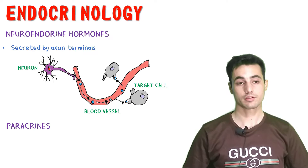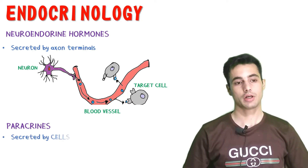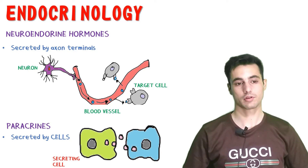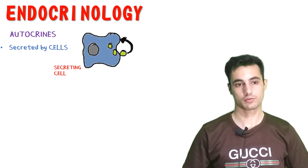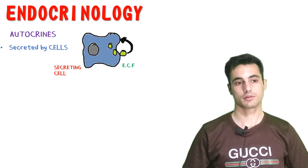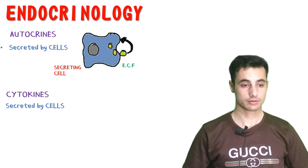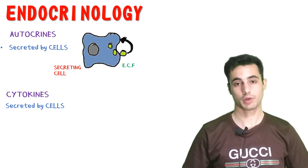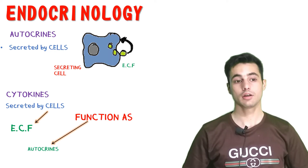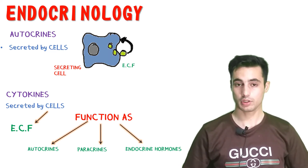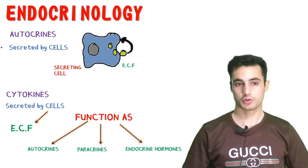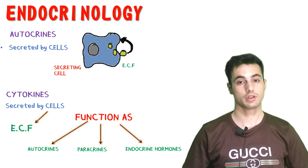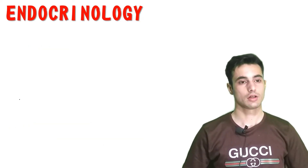Paracrines are secreted by cells into the extracellular fluid, and they influence the function of neighboring cells, which may be different or similar. Autocrines are secreted by cells into the extracellular fluid but influence the function of the cell itself. Cytokines are also secreted into the extracellular fluid, but they can function as autocrines, paracrines, and endocrine hormones as well. Important examples include helper T cells which secrete interleukins, and adipocytes which secrete leptin — both are cytokines.